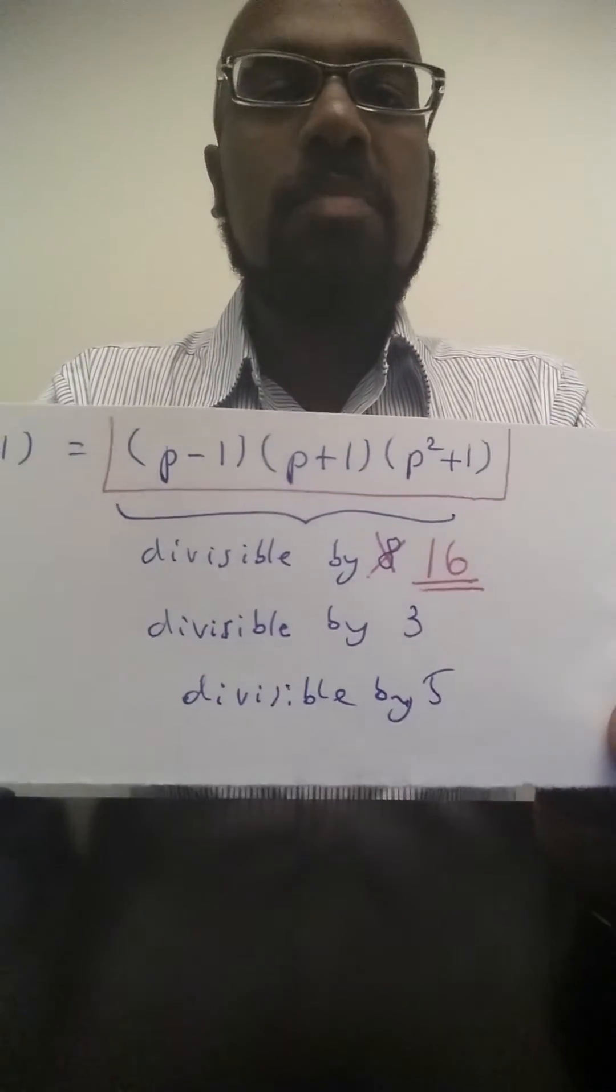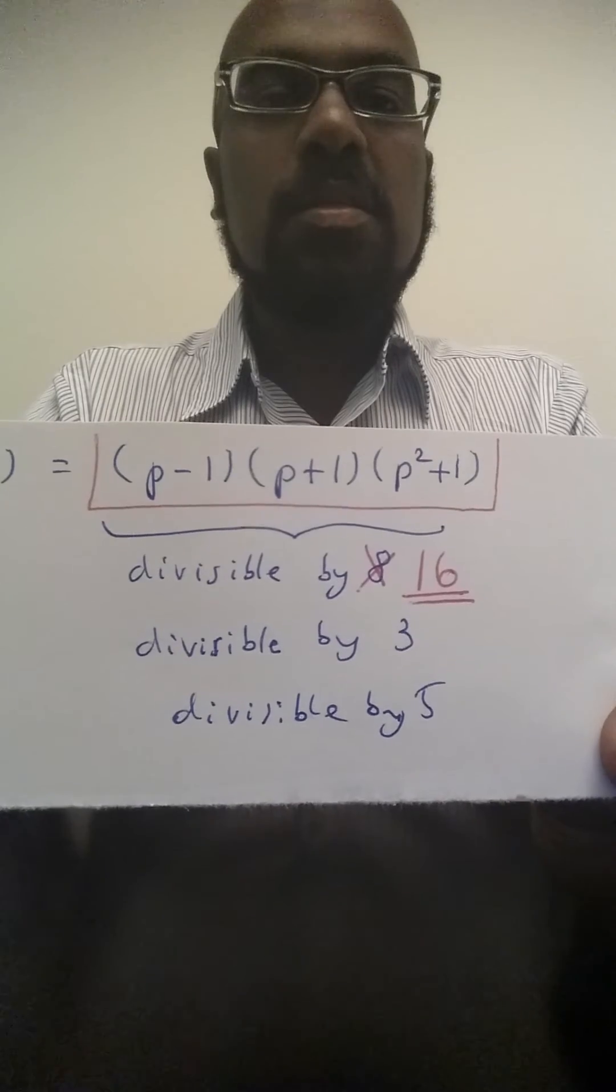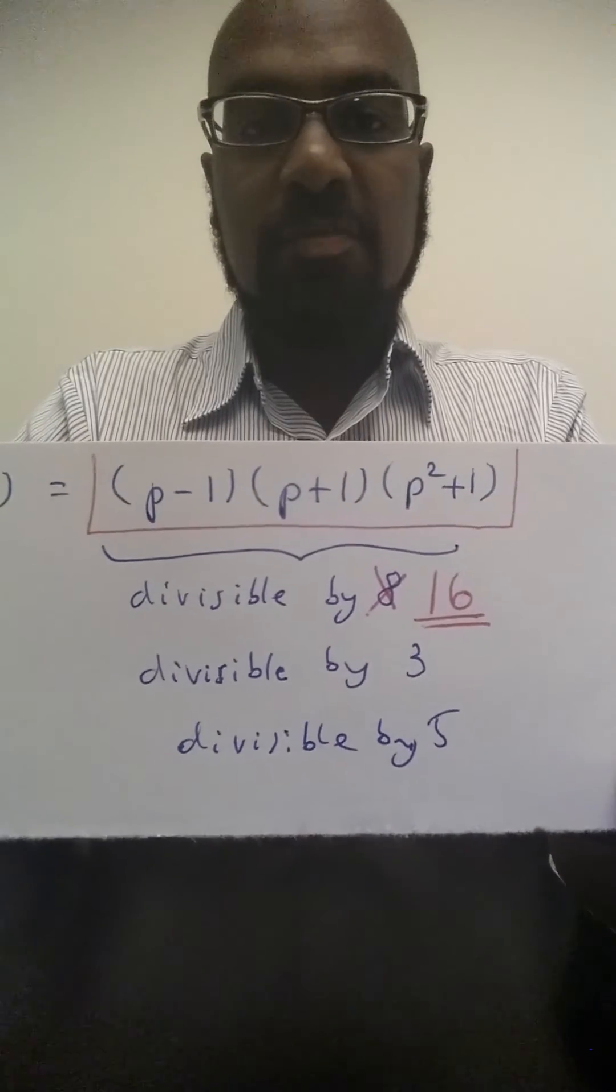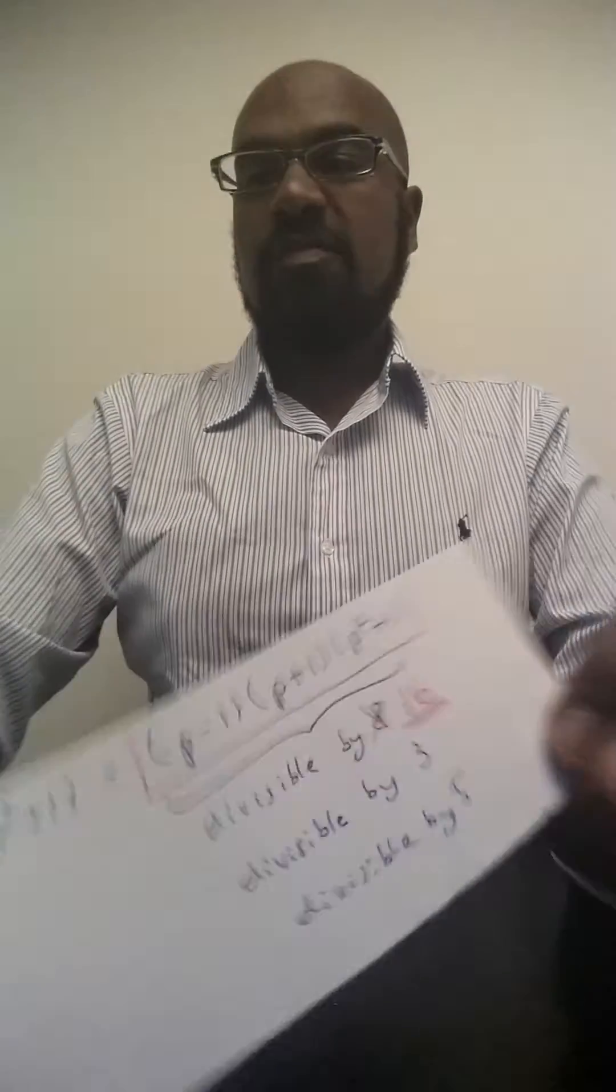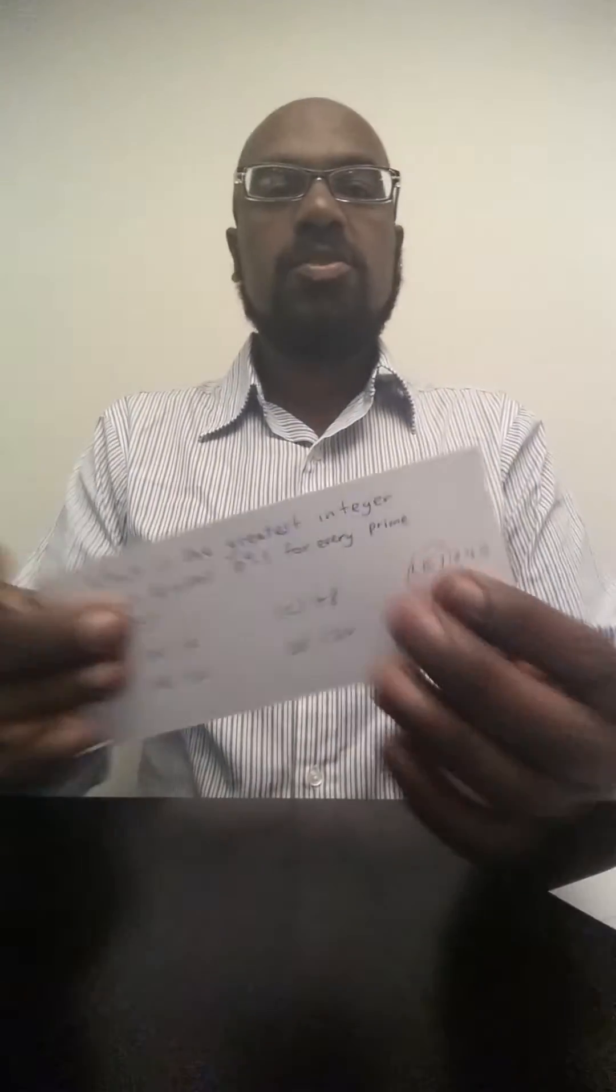So this is divisible by 16, by 3, and by 5. These three numbers are relatively prime. And so it's divisible by their product which is 240. And so our answer is 240.